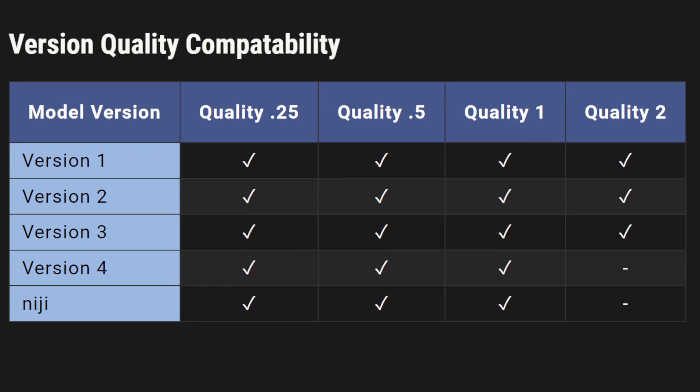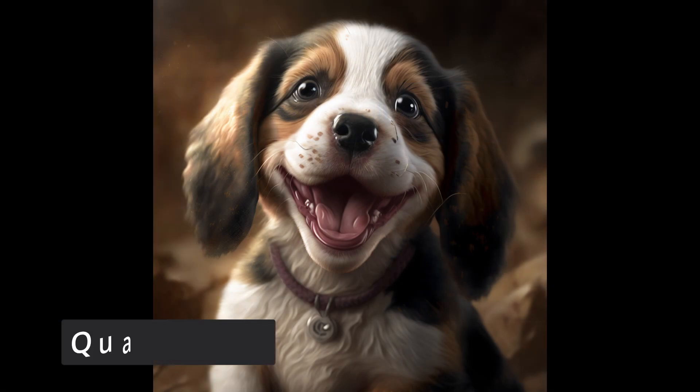Let's take a look at how these different quality levels will affect an image. Let's start with looking at this image. This is Tim, the happy puppy dog. This was done with quality 0.25, the lowest level quality.